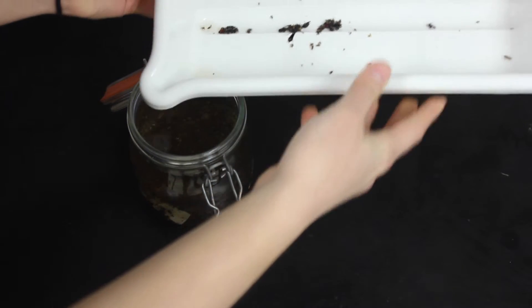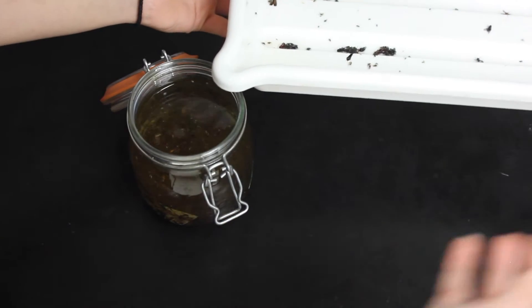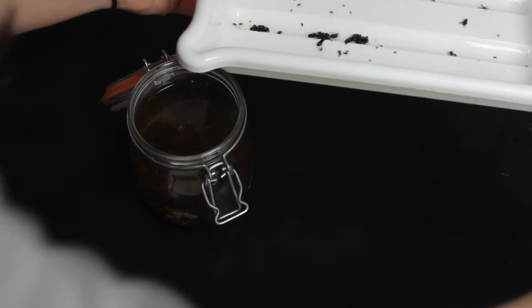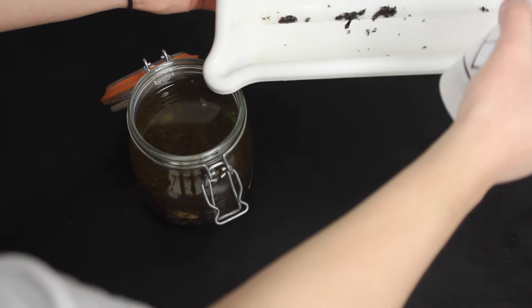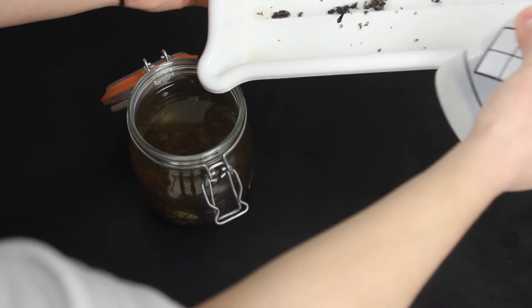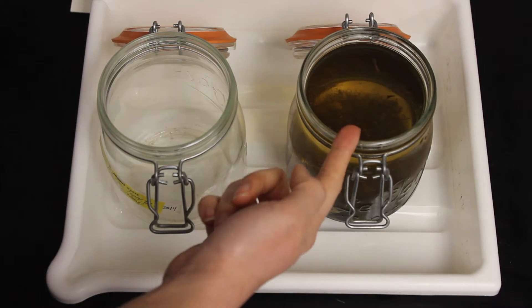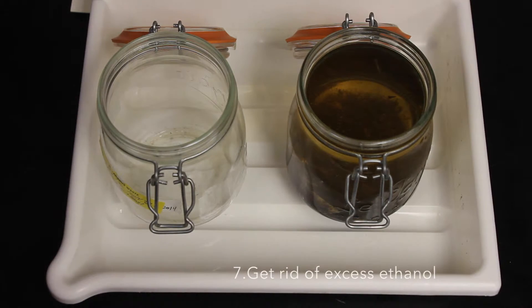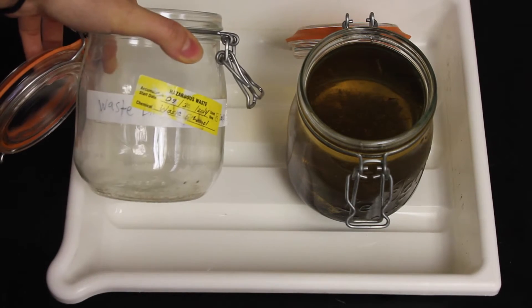As you can see, some of our specimen are still stuck to our large sorting tray. So we take our squeeze bottle full of 95% ethanol and wash them off. As you can see, there's too much ethanol in the jar. We need to get rid of it by placing the ethanol inside our waste jar.